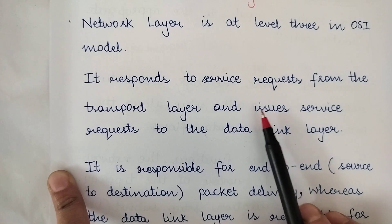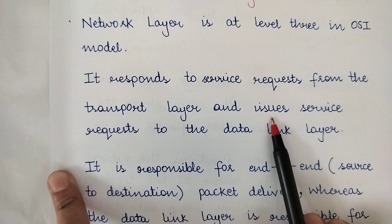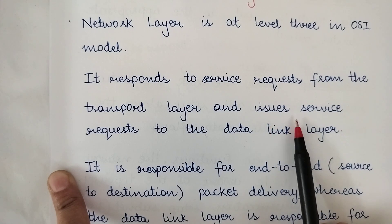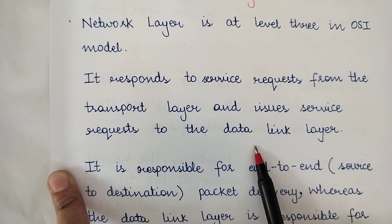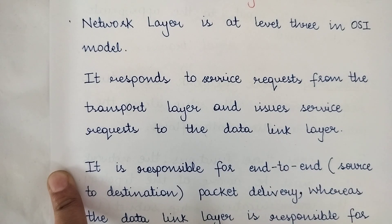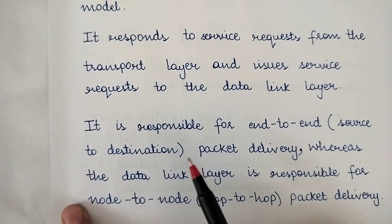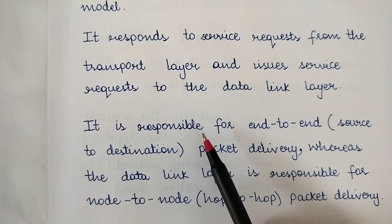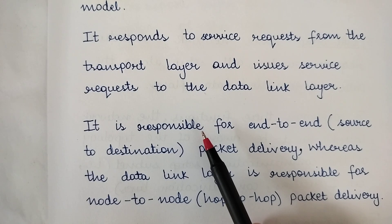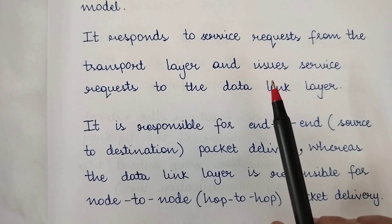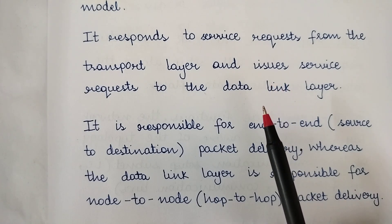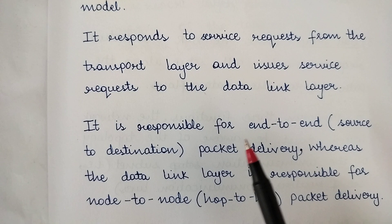After the network layer receives the service request from the transport layer, it issues those service requests to the data link layer. The pattern is that any layer receives the service request from the layer above it and issues a service request to the layer below it. So the network layer receives requests from the transport layer above it and issues requests to the data link layer below it.